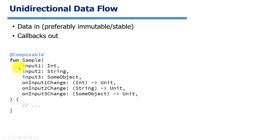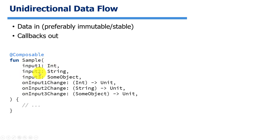The callbacks are passed in using functional types — for example, a function that takes an integer and returns nothing, or a function that takes a string and processes it. This allows your function to be completely self-contained: it takes immutable values in and calls functions to tell the outside world that something needs to change. Note that you don't need a one-to-one relationship between inputs and callbacks — callbacks can act on a larger object composed of some inputs, or some inputs just won't be changed by the function.